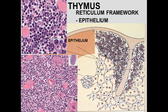A capsule surrounds the thymus with septa projecting inward. The cells in the thymus are epithelial reticular cells that make a reticular network throughout. This is the cortex, where the blood-thymus barrier is located — the barrier is in the cortex, not the medulla. We can see epithelial cells with a large nucleus and prominent nucleolus, and a high density of cells in the cortex versus less density in the medulla, which also contains Hassall's corpuscles.